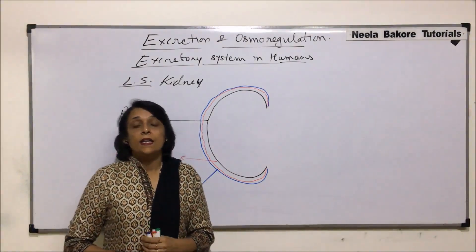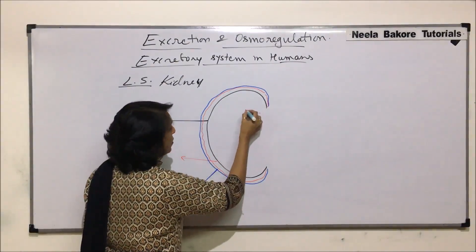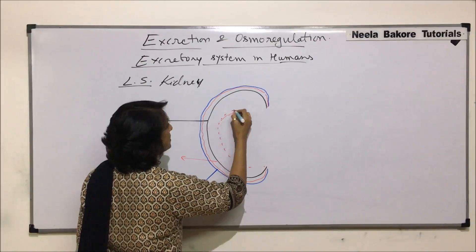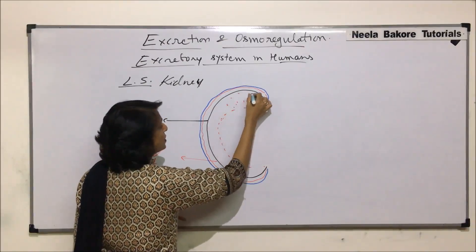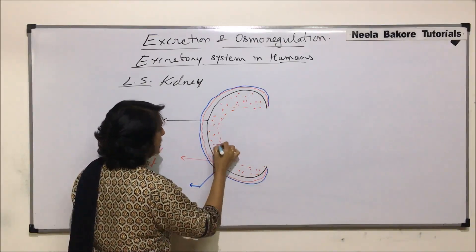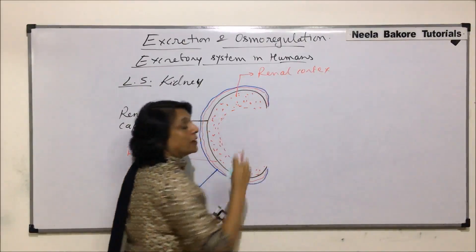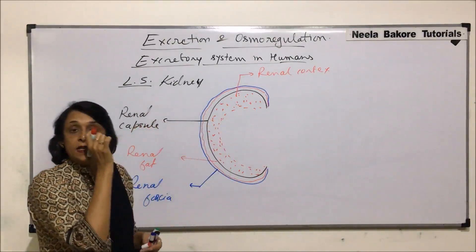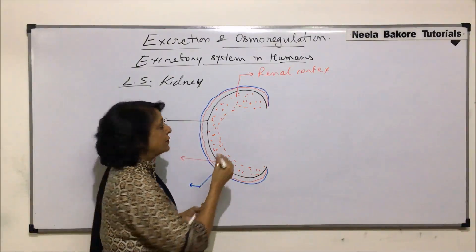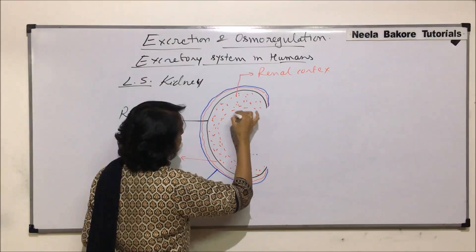Now we see the internal part. The internal part of the kidney is divided into two zones. The outer zone is known as renal cortex — this outer red dotted band or area which we are showing here is renal cortex. The inner area is the medullary area or renal medulla.